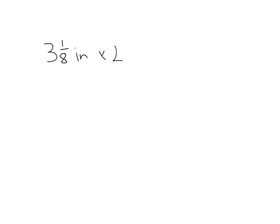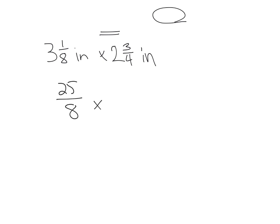Here's a word problem: Chris is making a tabletop with leftover tiles. Each tile is three and one eighth inches by two and three fourths inches, and he has nine of them. We want the total area — it's a two-step process: first multiply to get the area of one tile, then multiply by nine. I'll quickly go through the setup.